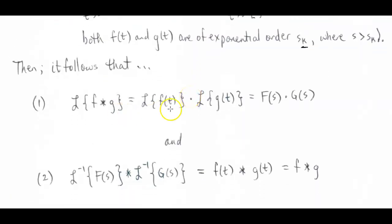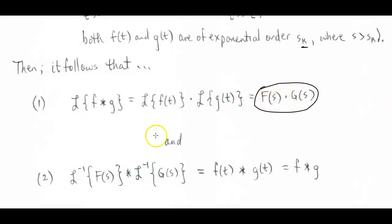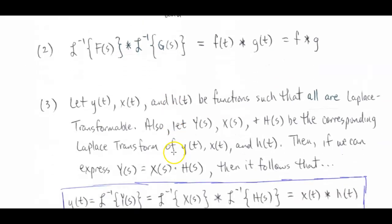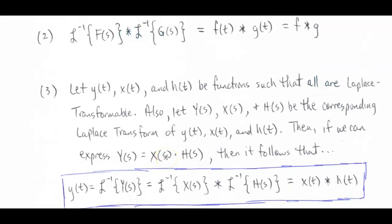If both f and g are Laplace transformable, it follows that the Laplace transform of the convolution of two functions equals the Laplace transform of each function multiplied together with regular multiplication — and vice versa. So if we want to find what f convolved with g is, we take the inverse Laplace transform of each factor and convolve them together. The third part of this theorem restates this but sets us up for theorem two: if y, x, and h are all Laplace transformable with Y, X, H as their transforms, then Y = X·H, and the inverse Laplace transform gives us the convolution of h and f.